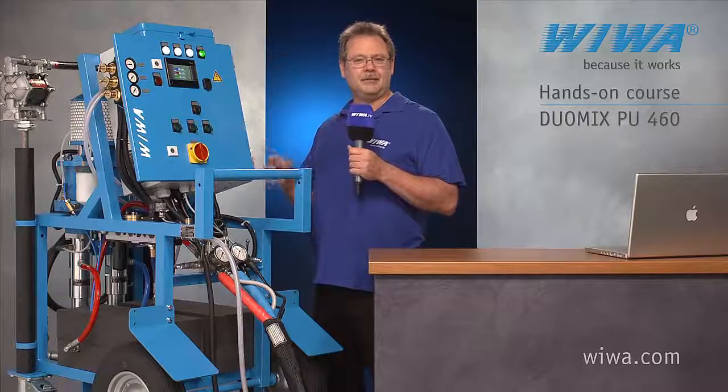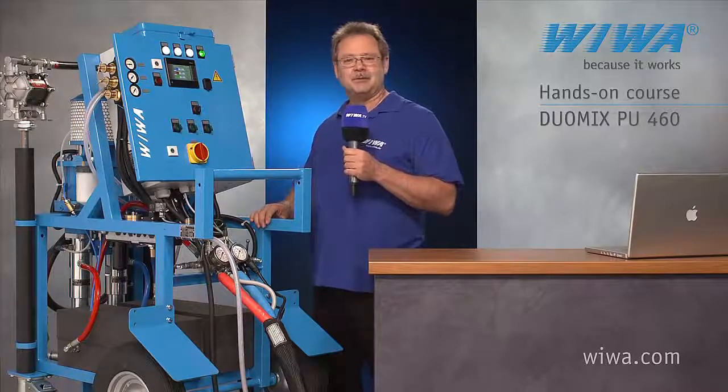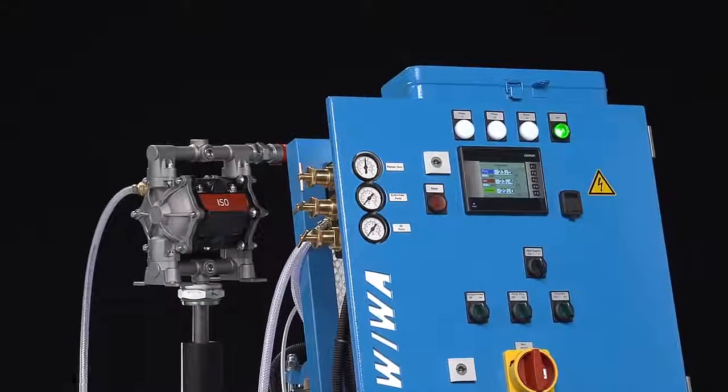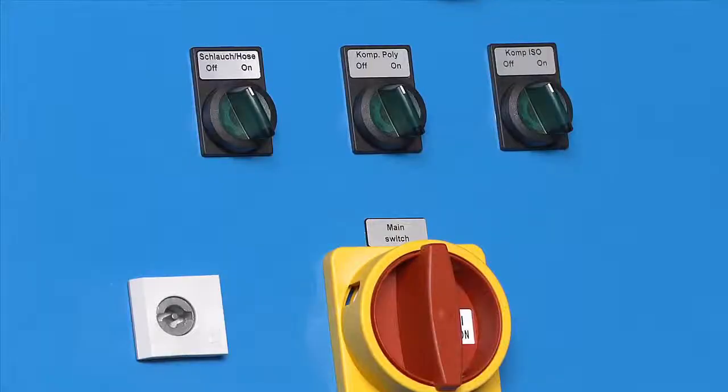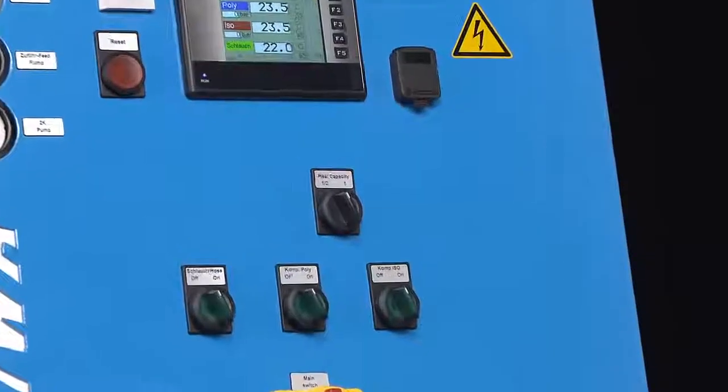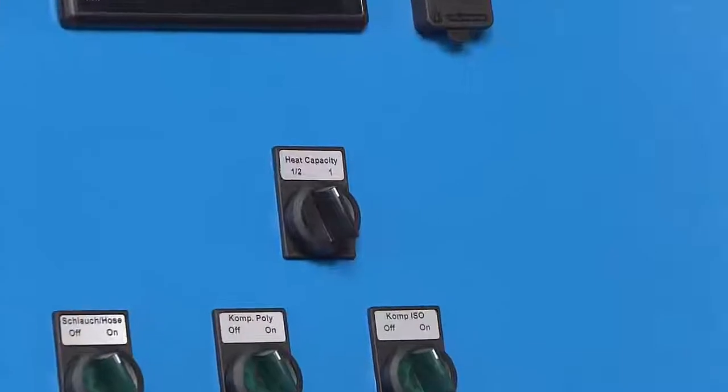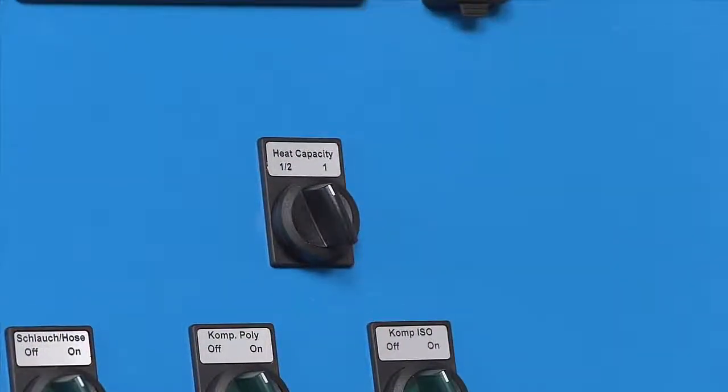In the next step, I'll tell you about the individual system components. This is the control box that includes the compressed air regulators and temperature control panel. You will find the switches for the main power supply, the heated hose package, the poly and ISO component heaters and a selector for the desired heater wattage. The wattage selector is helpful if you do not require full heating power or if the available power supply is lower than the rating of the system.